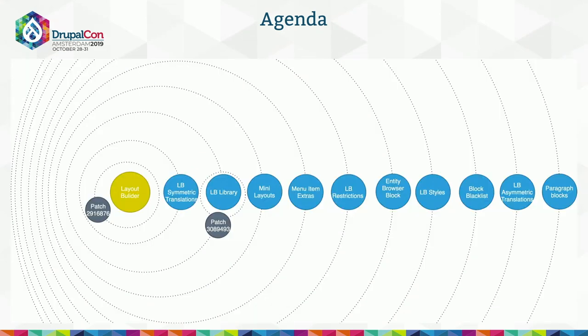The agenda for today is my personal layout builder ecosystem. This ecosystem is much bigger, but I picked up modules that I think are very interesting and almost ready to be used. The modules which are closer to the sun are those I think will go into core at some point soon. The modules which are far away, like paragraph blocks, will most likely never go into core. And there are some satellites around a few modules — two particular patches I would also like to talk about.